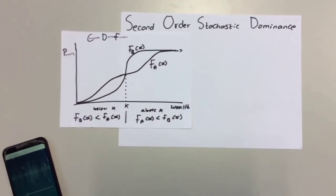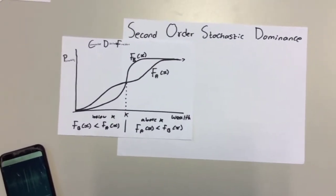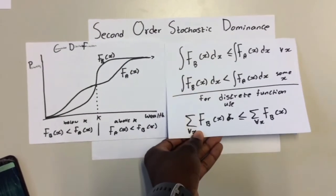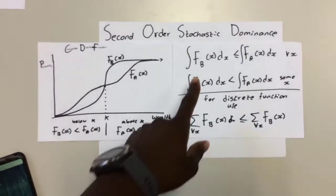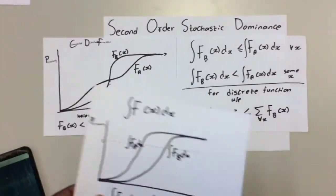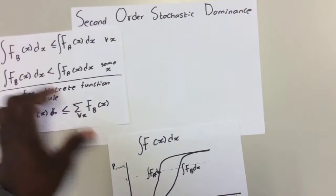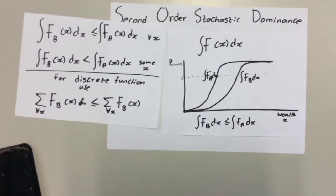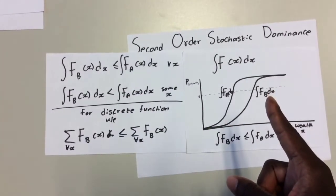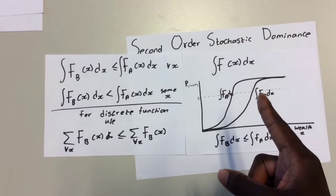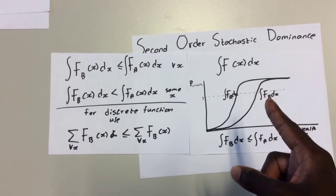In here we will assume that an investor is risk averse and we will have to use the integration of the two functions. When you integrate A and B and you draw the function, this is how it will look. As you can see, the integration of the CDF of B is less than that one of A, meaning that B is less volatile than A and therefore you choose B. Since you are a rational investor, you will obviously choose B.